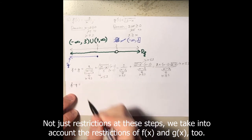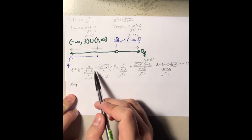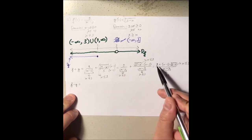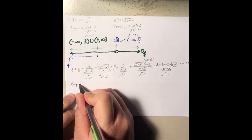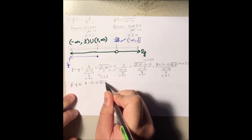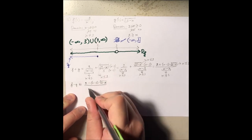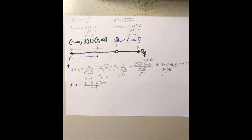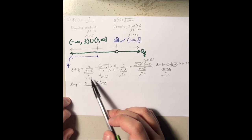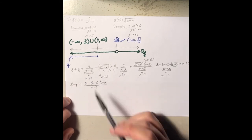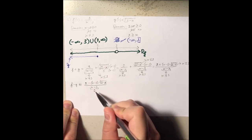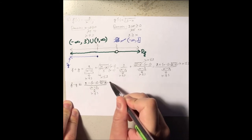For the difference f minus g, it can be found in a similar manner — the only difference is a minus sign instead of plus. We get 2 minus (x minus 3) times square root of 2 minus x, all over x minus 3. The points of discontinuity are the same: x cannot equal 3, and x must be less than or equal to 2.